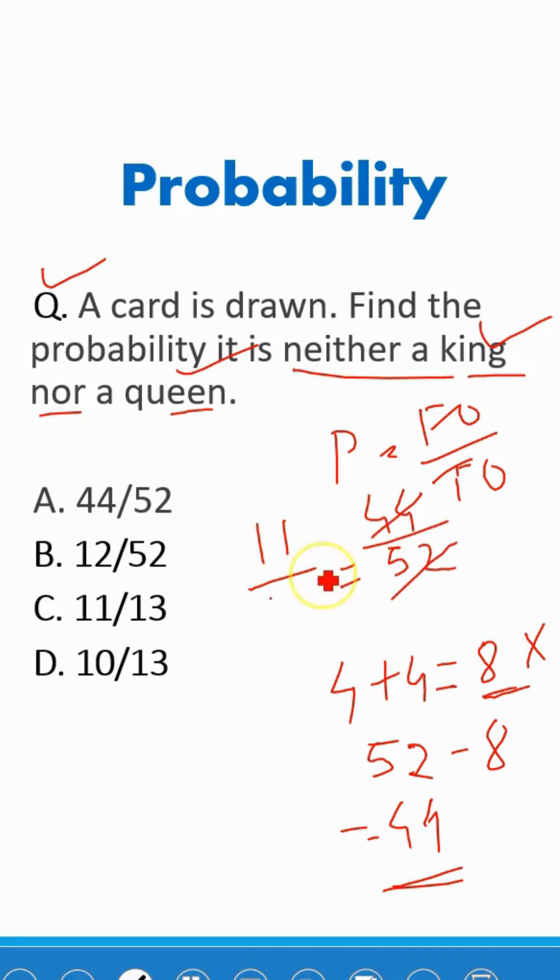If we further solve this, then it will become 11 by 30. So option C is the right answer.